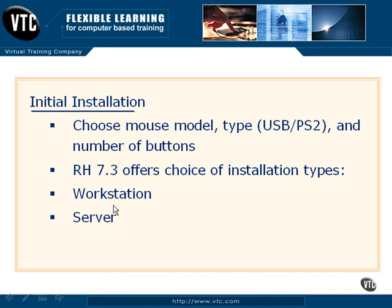When installing Red Hat 7.3, we have the ability to choose a couple of pre-configured options. The first one is Workstation. These options decide what packages to install or what software is necessary for your system. By choosing Workstation, we're basically saying we have a simple PC, probably in a network environment, that is going to require items such as word processing, possibly some file sharing, client tools, and things of that nature.